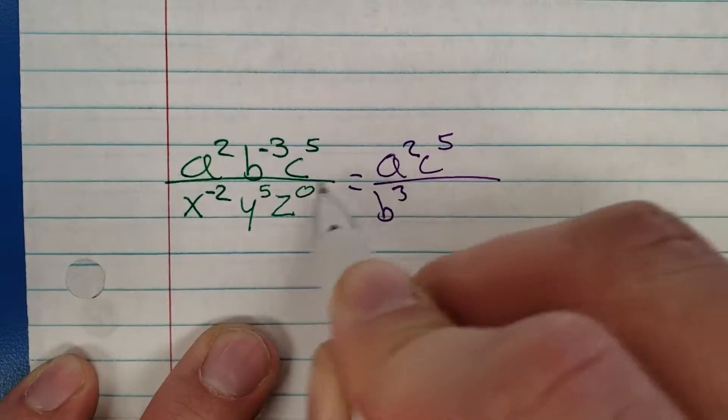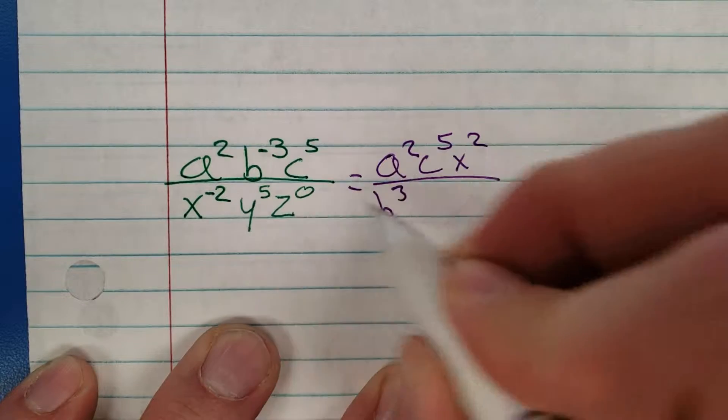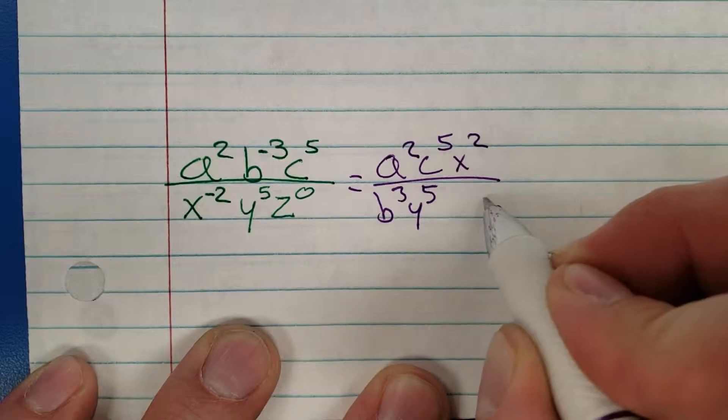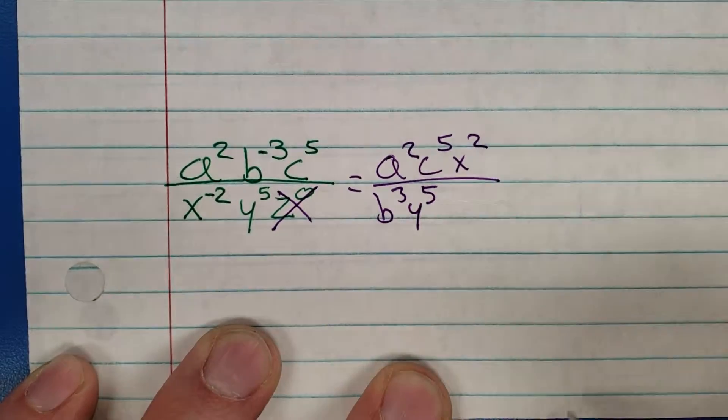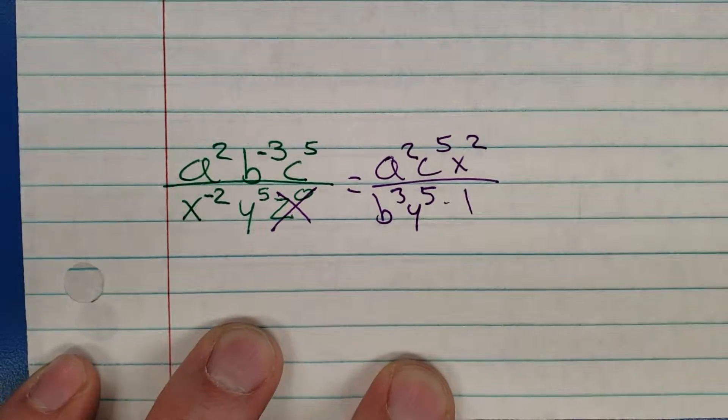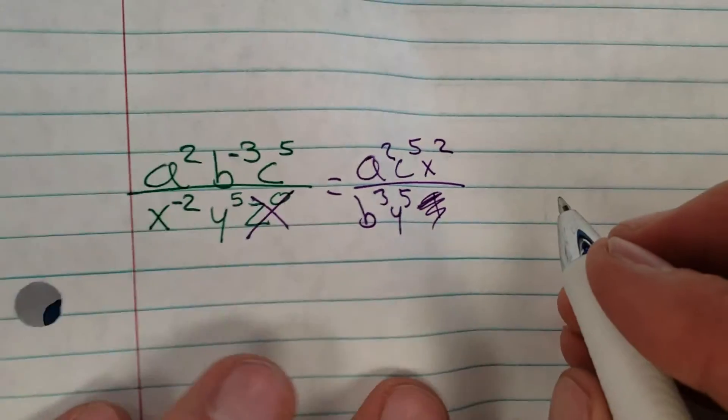Okay, top row we got you reorganized. Bottom row, x squared, you're moving up here. Y to the five, you're staying down here. Ooh, z to the zero. Would you write a one there? You could, but you'd waste space. It's gone. If it's a zero it just completely goes away, so don't write it.